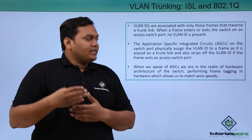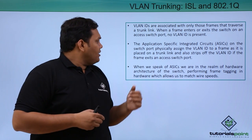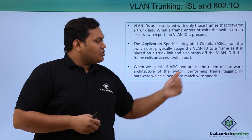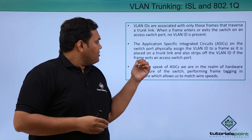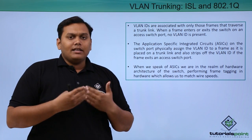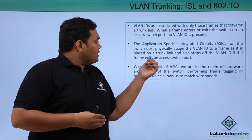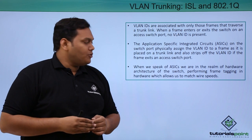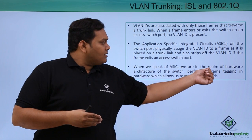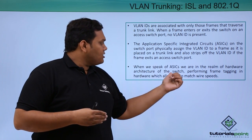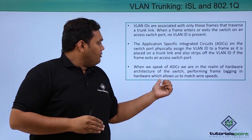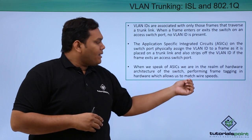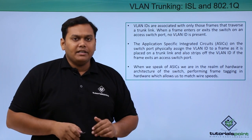Application-Specific Integrated Circuits, known as ASICs, are used here. The switch port physically assigns the VLAN ID to the frame, places it in the trunk link, and also strips off the VLAN ID after it is received by the other device. When a frame enters, it gets tagged; when it exits the access switch port, the frame tag is removed. The hardware architecture of the switch performs frame tagging in hardware, which allows matching wire speeds — meaning the bandwidth speed between wires is maintained.